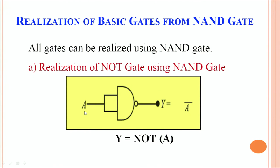When A is equal to 0, the output Y, which is the complement of A, is equal to 1, and when A is 1 the output comes out to be 0. So Y equals A complement, which is exactly the expression of a NOT gate. Thus by simply joining the two input terminals together and providing a single input, we are capable of realizing a NOT gate using a NAND gate.